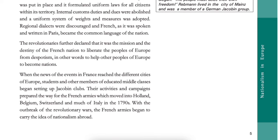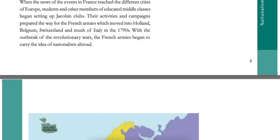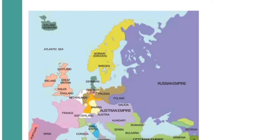The revolutionaries further declared that it was the mission and destiny of the French nation to liberate the peoples of Europe from despotism — in other words, to help other people of Europe to become nations. When the news of the events in France reached different cities of Europe, students and other members of the educated middle classes began setting up Jacobin clubs. Their activities and campaigns prepared the way for the French armies which moved into Holland, Belgium, Switzerland and much of Italy in the 1790s. With the outbreak of the Revolutionary Wars, the French armies began to carry the idea of nationalism abroad.